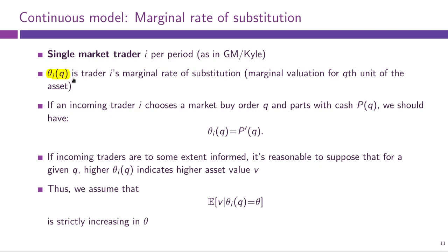Given theta_i and the way we introduced our limit traders, the market trader will determine their buy order size Q by equating their marginal valuation for another unit of the asset and the marginal price for one more unit.